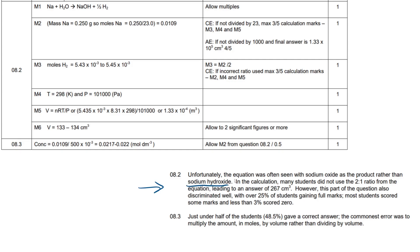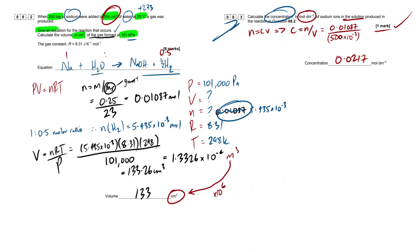Unfortunately, the equation was often seen with sodium oxide as the product rather than sodium hydroxide. So I'll make a note of that and I'll come back to it. In this calculation, many students did not use the 2 to 1 ratio from the equation, leading to an answer of 267. However, this part of the question also discriminated well, with over 25% of students gaining full marks. So that's really good.